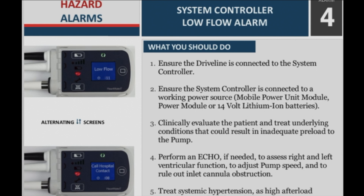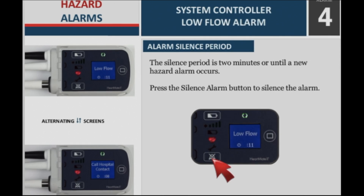Step 4: Perform an echo, if needed, to assess right and left ventricular function, to adjust pump speed, and to rule out inlet canal obstruction. Step 5: Treat systemic high afterload. Alarm silence period: The silence period is 2 minutes or until a new hazard alarm occurs. Press the silence alarm button to silence the alarm.